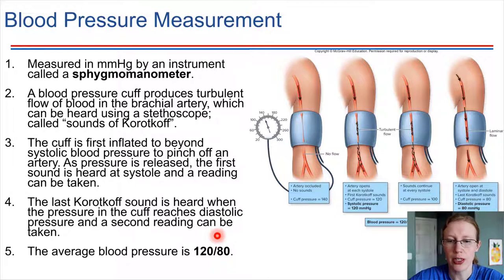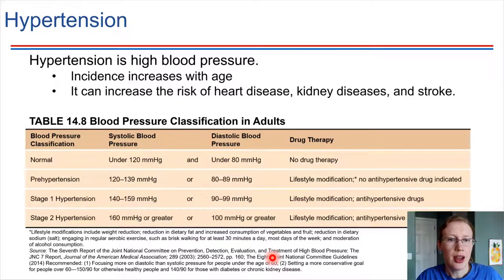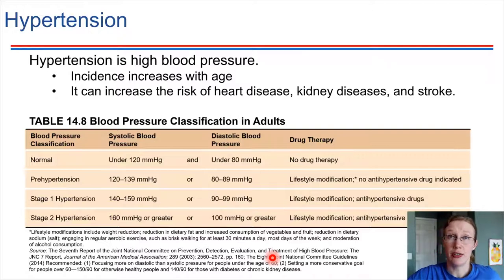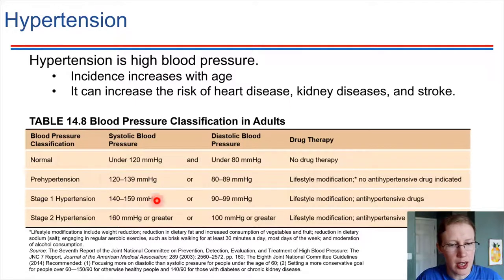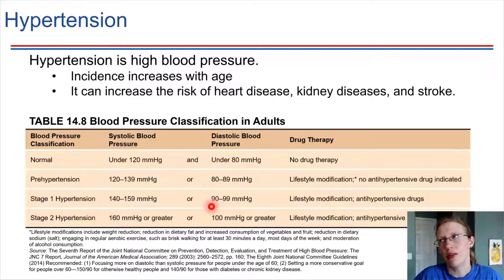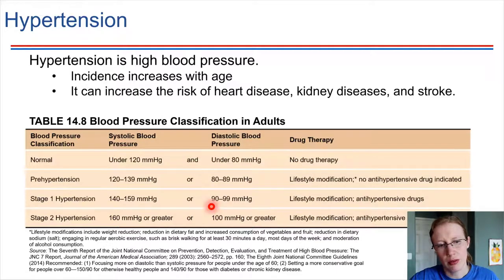Both readings are very important for monitoring overall blood pressure, which leads us to a discussion of hypertension. Hypertension is the name for high blood pressure, and it tends to be more common as people get older. It's a problem because it increases risk for heart disease, kidney disease, and stroke. High blood pressure is generally classified as a systolic pressure greater than 140 or a diastolic pressure greater than 90, consistently over time — not just a one-time reading.